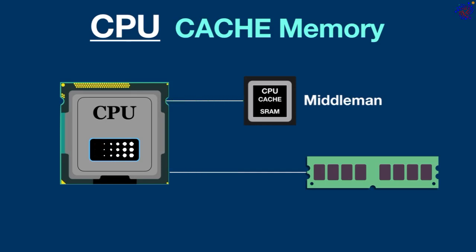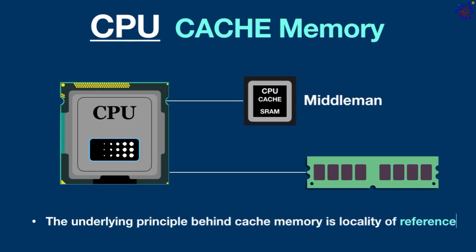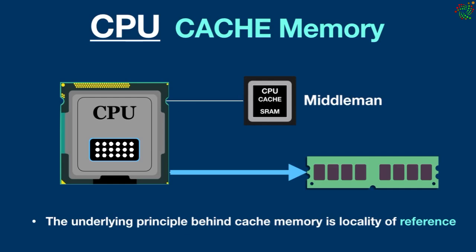This storage allows for quick retrieval when needed. The underlying principle behind cache memory is locality of reference, which suggests that if data is accessed once, it is likely to be accessed again and again in the near future. By storing such data in the cache, the system significantly reduces the CPU's access time to the RAM, leading to high-speed data access for the processor.